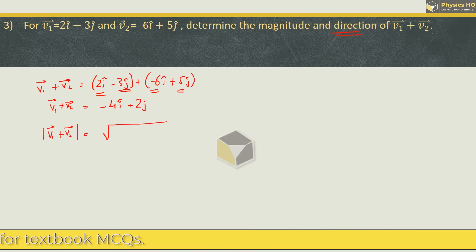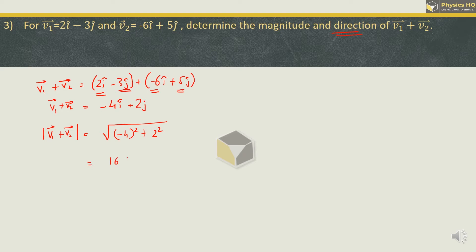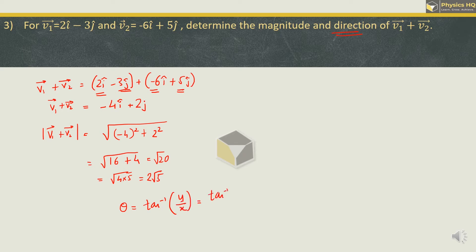The magnitude is √(x² + y²). (-4)² = 16 and 2² = 4, so this is √20 = √(4×5) = 2√5. To find the direction, we use the formula θ = tan⁻¹(y component / x component). So θ = tan⁻¹(2 / -4) = tan⁻¹(-1/2). This is the angle that the vector makes with the x-axis.